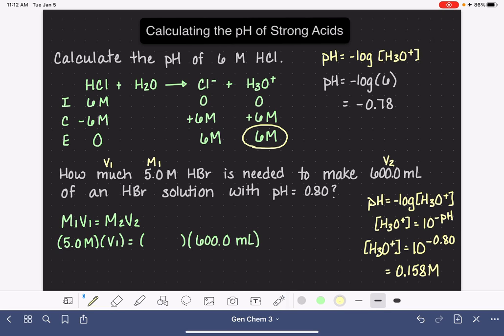And that's the concentration of the solution that we need to end up with. So that's our M2. I'm going to plug that in. Now all that we have to do is solve for V1. 0.158 times 600 divided by 5 gives us 18.96 milliliters.